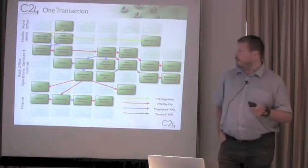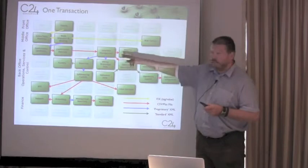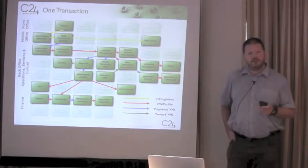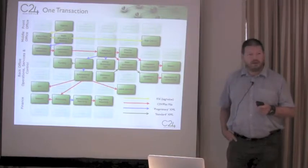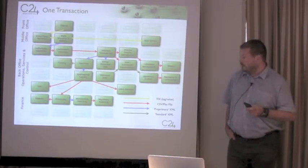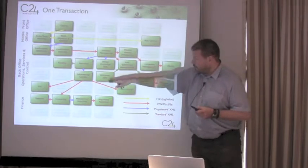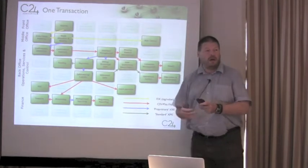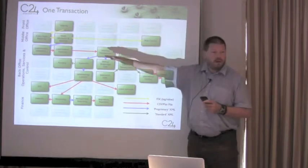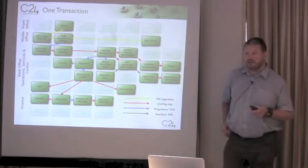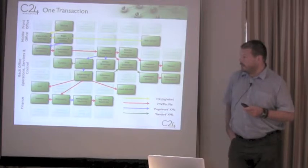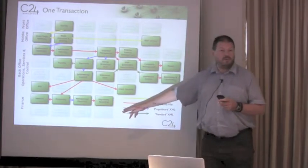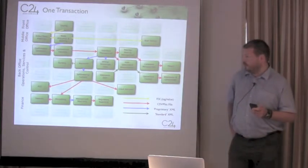Then you've got FIX, then FIXML. Then we get down into FpML. We've got lots of comma-delimited files for database imports and exports — naturally relational databases. And then as we come out, we have interfaces to other banks to match trades via FpML. Up at the top, we've got proprietary formats like SWIFT, which is also an ISO standard.